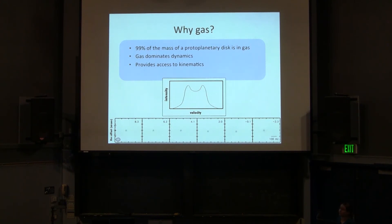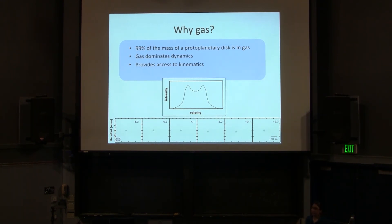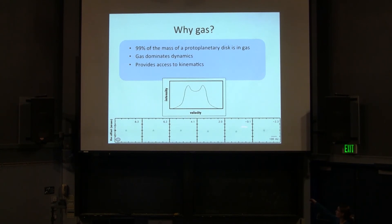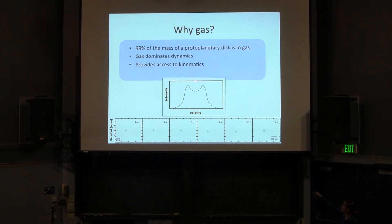This double-peaked structure is very typical for protoplanetary disks. When we observe disks with radio telescopes using molecular lines — or at optical and infrared wavelengths with integral field units — you can create a position-position-velocity cube, getting position in right ascension, position in declination, and velocity. In each velocity channel across the line, we create an image of the material at that velocity. Let's start by thinking about the line wings. The line center is here, and if the star isn't moving relative to us, we'd expect that at zero velocity.